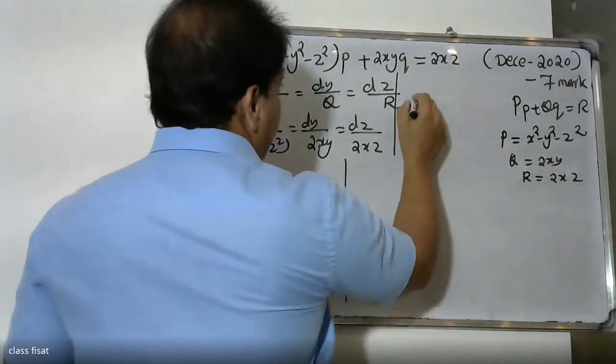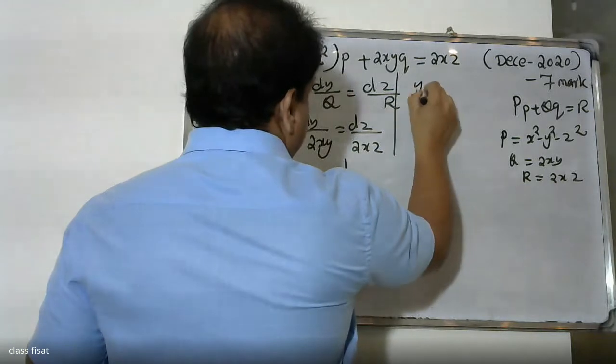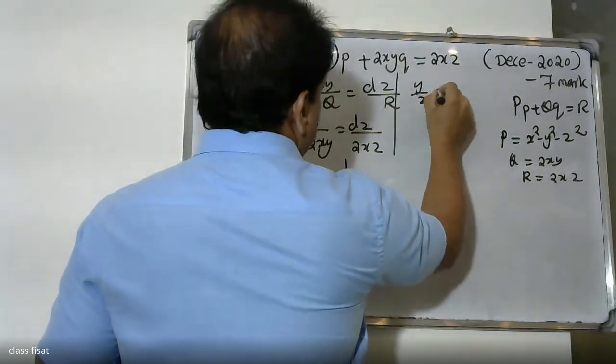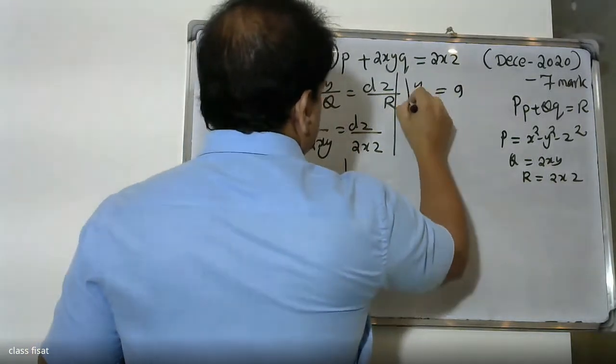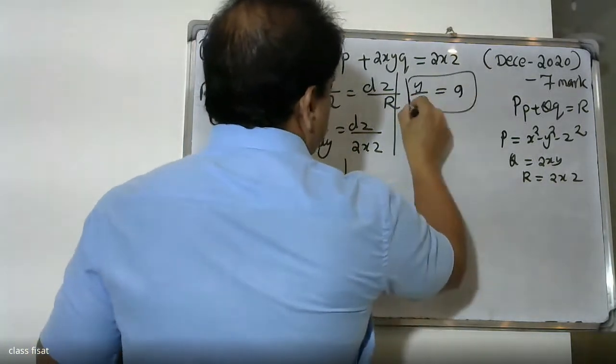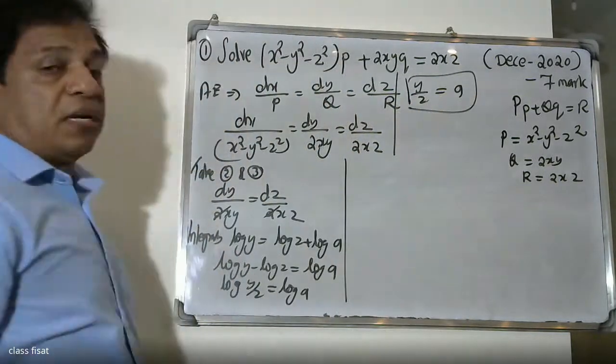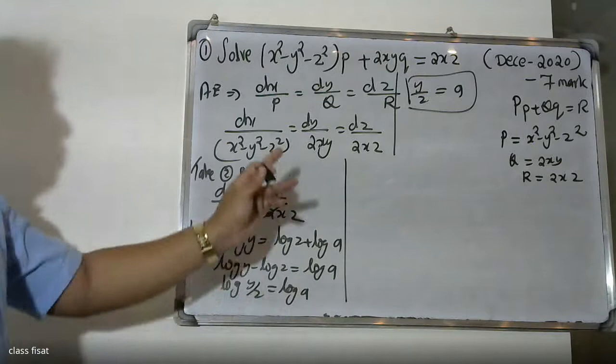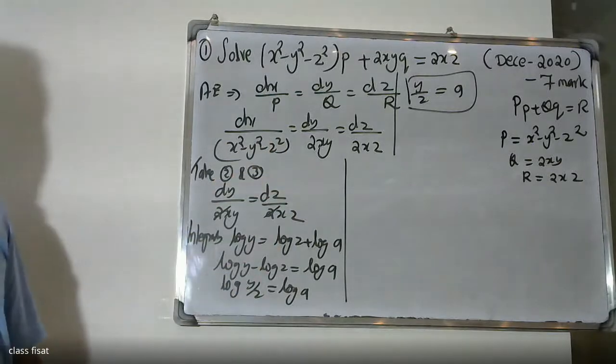After integration: log y minus log z equals a constant. Using the log a minus log b equals log(a/b) formula, we get log(y/z) = log a. Therefore, y/z = a. This is our first constant.